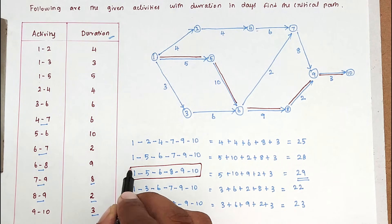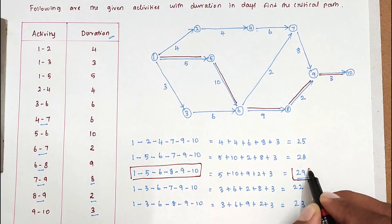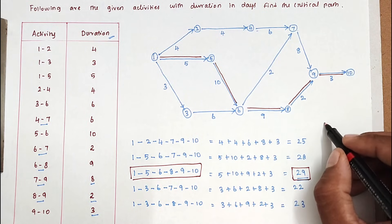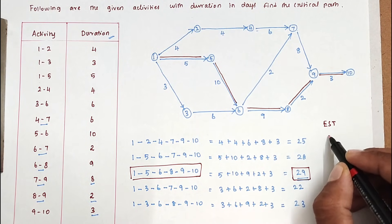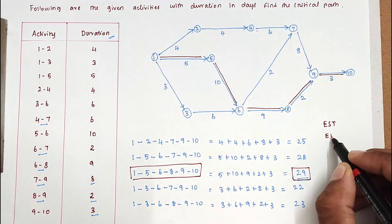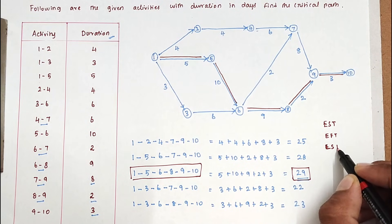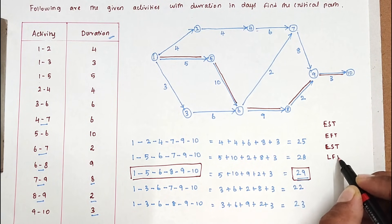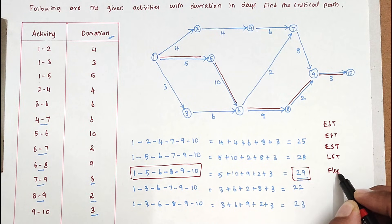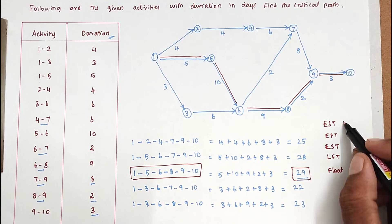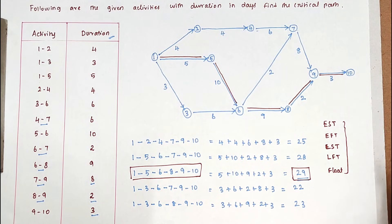So this is the critical path and 29 is the critical duration. Using this network diagram we can also calculate the Earliest Start Time (EST), Earliest Finish Time (EFT), Latest Start Time (LST), Latest Finish Time (LFT), and floats. We will see those calculations in the next video.